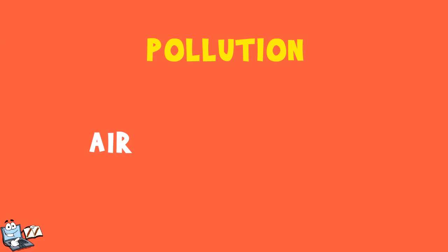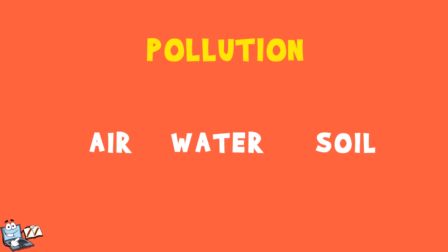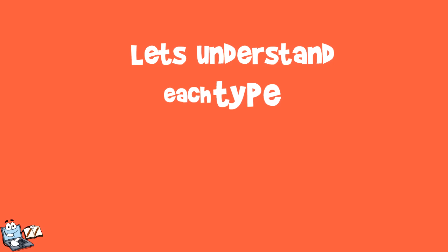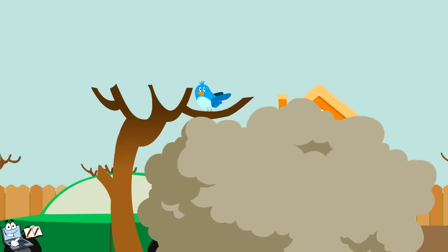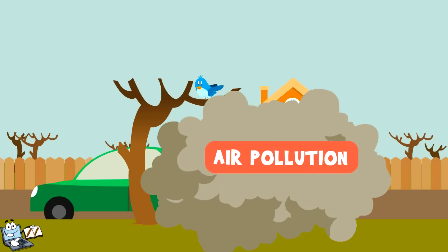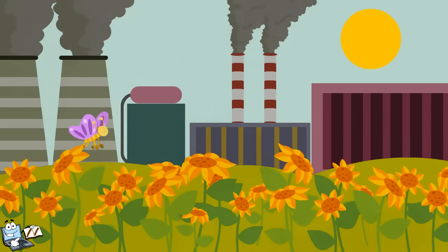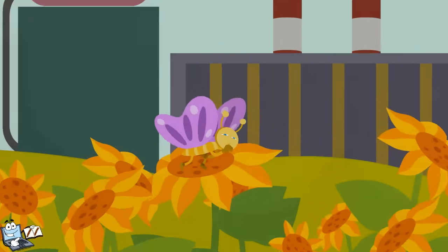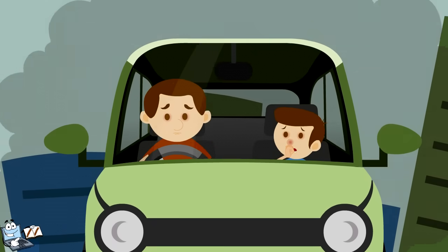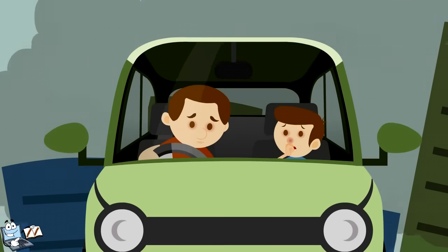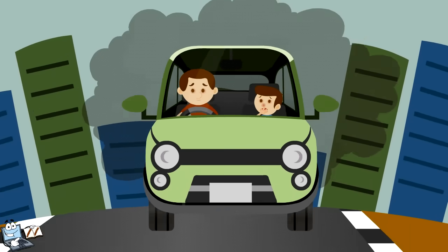Air, water, and soil are all affected by pollution. Let's understand each type of pollution one by one. At first, air pollution. Air pollution happens when the air gets dirty. We cannot breathe properly in dirty air.